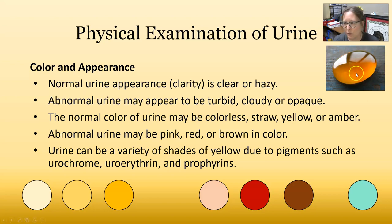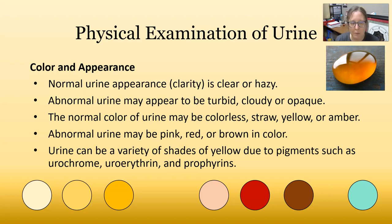This is a picture of what amber looks like — a very golden, rich, orangey, almost brown color. But that could just be a very concentrated urine. A normal urine could also be pink, red, or brown in color. Some urines can even be blue-green, depending on the types of medication a patient might be on.